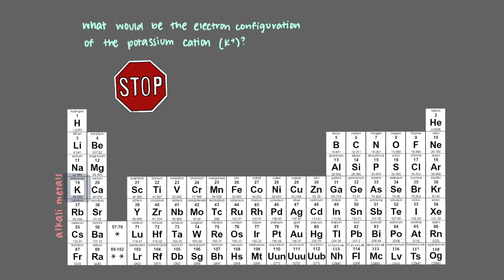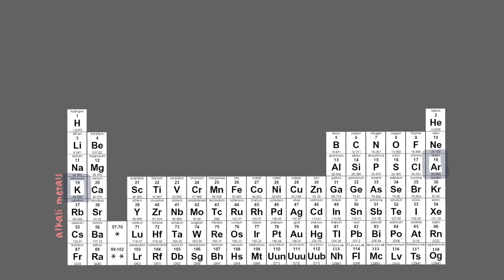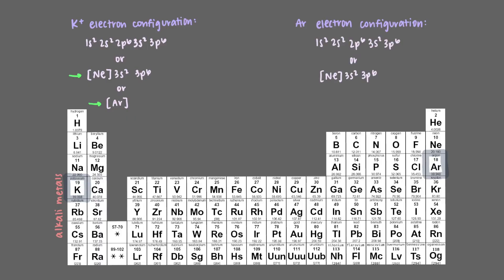What would be the electron configuration of the potassium cation, K+? Because potassium loses one electron to achieve the same configuration as argon, the preceding noble gas, its electron configuration is the same as that of argon. This means that these two answers are correct.